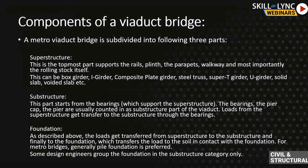The superstructure is the topmost part; it supports the rail plinth, the parapets, walkway, and most importantly the rolling stock — which is the train. Superstructure types include box girder, bi-girder, composite plate girders, steel truss, super T-girder, U-girder, solid slab, and void slab, among others. In different countries they follow different types — in Australia they use the super T-girder, a pre-stressed member placed on pier heads with a cast top slab. The substructure starts from the bearings: pier cap, pier, and usually counts as the substructure.